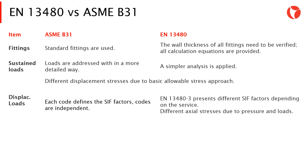Regarding the SIF factors, the ASME B31 code has different SIFs for every part or section of the code — B31-1, B31-3, etc. The EN 13480 code presents different SIF factors depending on the service, and there are different axial stresses due to pressure and loads.